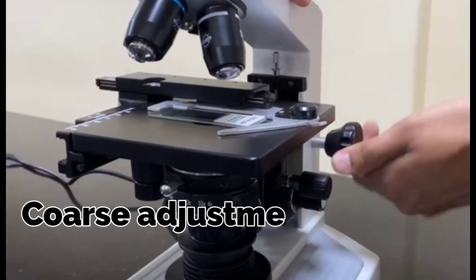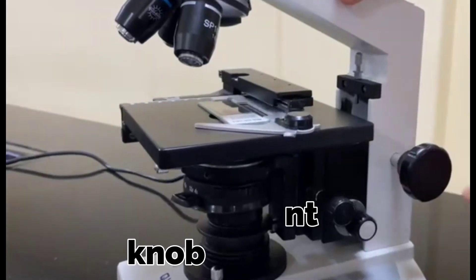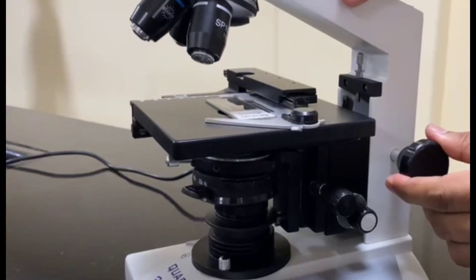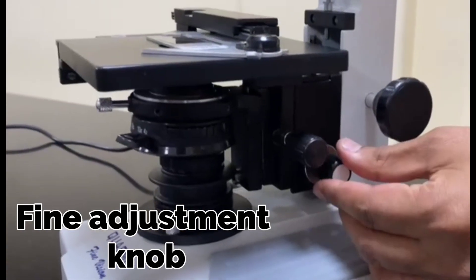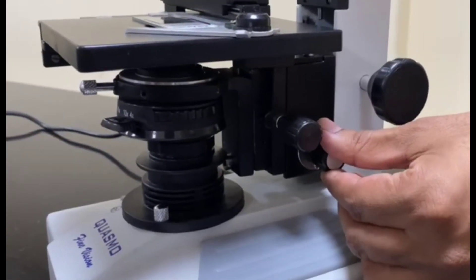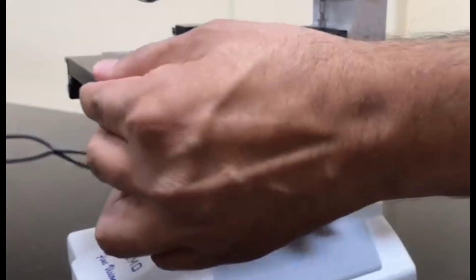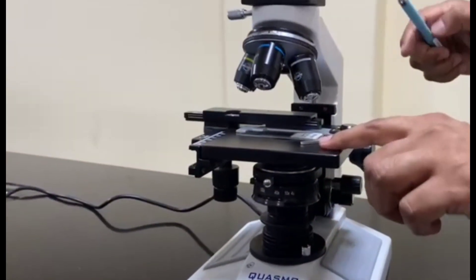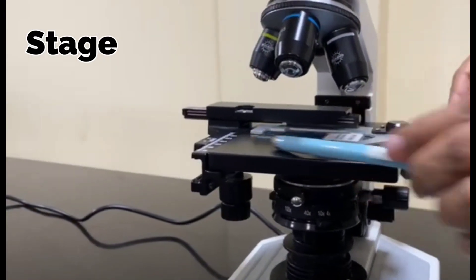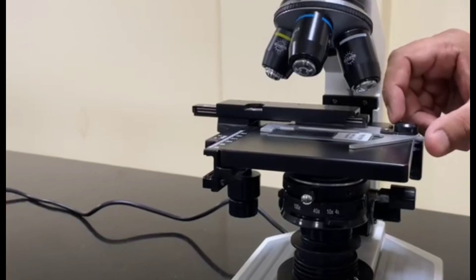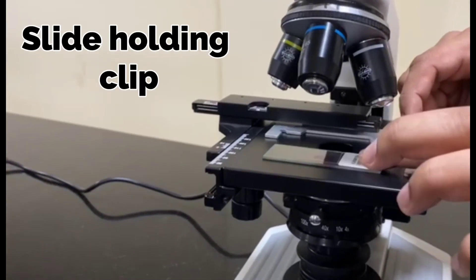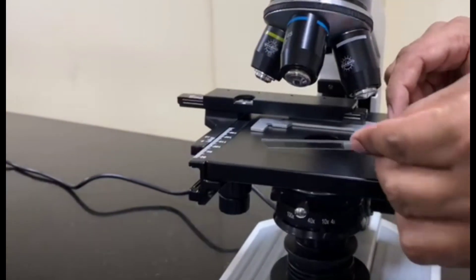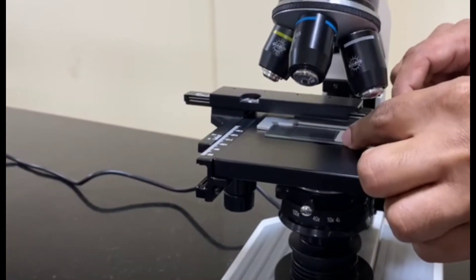This is the coarse adjustment knob which can be used to move the stage upward and downward, and this is the fine adjustment knob, which is used to move the stage very finely to adjust the magnification. Here you can see that this is the stage of the compound microscope and this is the clip to hold the slide in position. This is the slide, you can place it here and you can fix it by the clip.